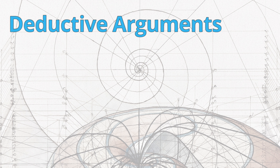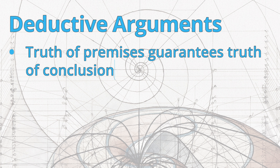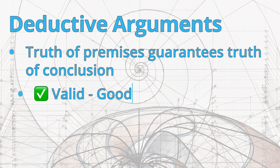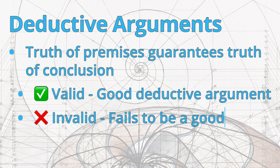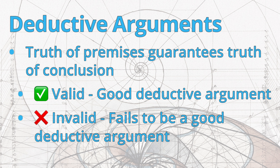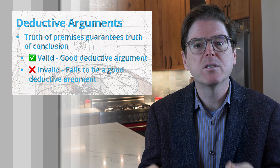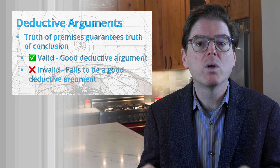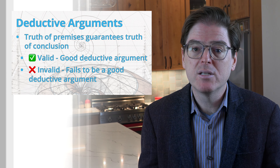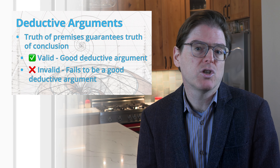The type of arguments we've been talking about so far are called deductive arguments. Deductive arguments are the kind of logical argument where the truth of the premise statements guarantees the truth of the conclusion statement. A good deductive argument is one that is valid. If an argument is invalid, it fails to be a good deductive argument. There are a lot more forms of deductive arguments than the simple ones we've been thinking about here — studying these is the kind of thing you would do in a logic class.